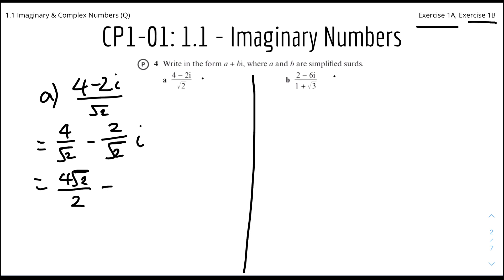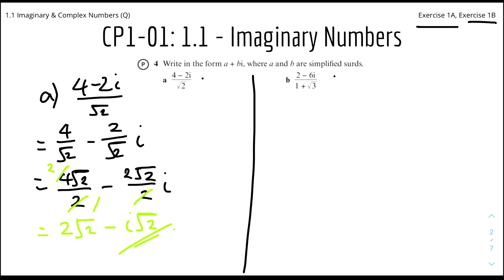And on the right, 2 over root 2 would be 2 root 2 over 2i. From here we can cancel out the 2 from both sides. So we're left with 2 root 2 minus i root 2, and that's the answer.